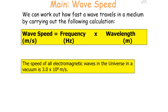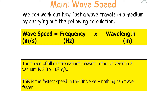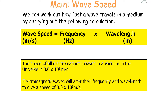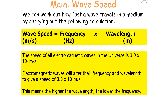It's important to note that the speed of all electromagnetic waves in the universe in a vacuum is 3 times 10 to the 8 meters per second. This is the fastest speed in the universe and nothing can travel faster. Electromagnetic waves will alter their frequency and wavelength to give a speed of 3 times 10 to the 8 meters per second, meaning the higher the wavelength, the lower the frequency, and the shorter the wavelength, the higher the frequency.